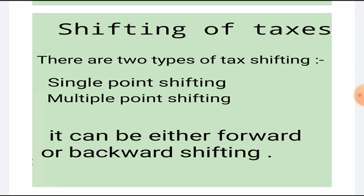And shifting of taxes can be either forward or backward as well. So what does this mean? The shifting that happens can by nature be either forward or backward. In forward shifting cases, the monetary burden falls more on the buyers than the sellers. And in backward shifting cases, the burden falls more on the sellers than the buyers.